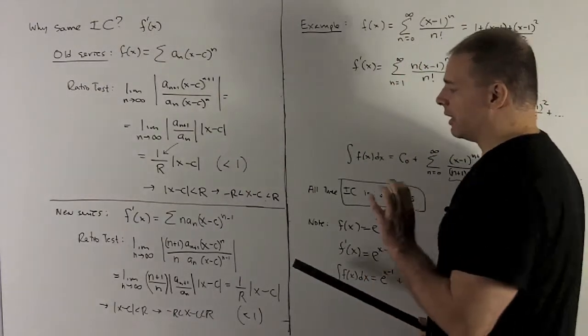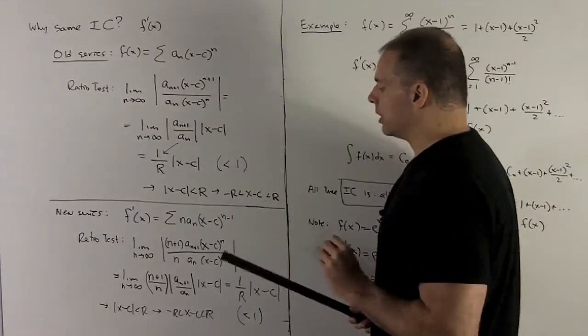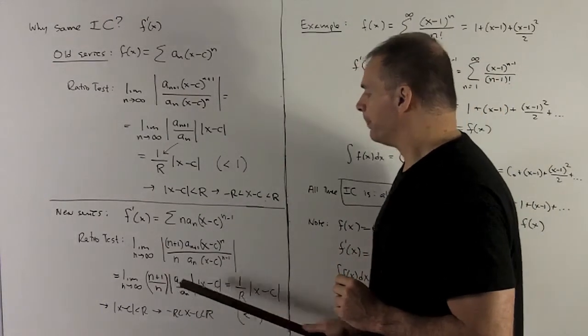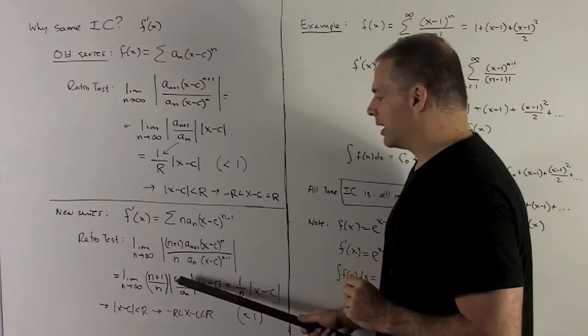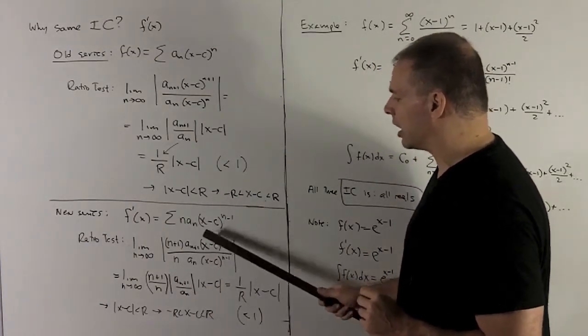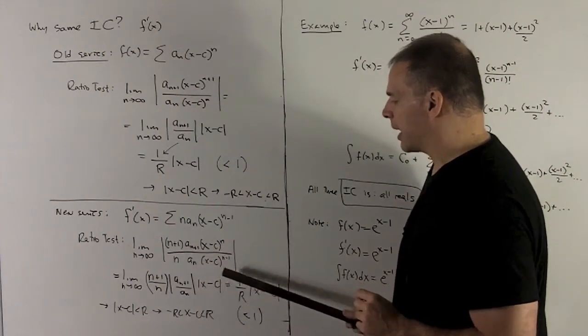We'll take the limit of this term here. Let's break it up into three pieces. First we're going to set out the (n+1)/n, then we're going to set aside a_{n+1}/a_n, and I'll set aside what happens when we cancel here. I'll just have an |x-c|.